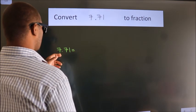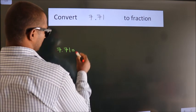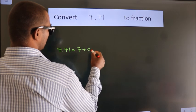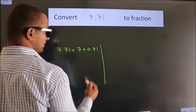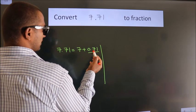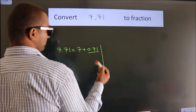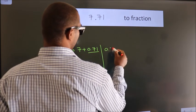First we should break this into 7 plus 0.71. Next, convert this to fraction. So 0.71.